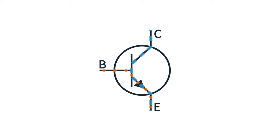With this principle, you can use a BJT as a switch or an amplifier. This is why BJTs are so powerful. With a relatively small base current, you can make significant changes in the collector to emitter current.